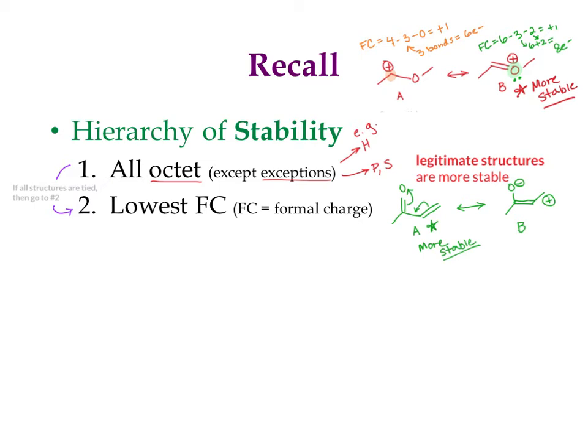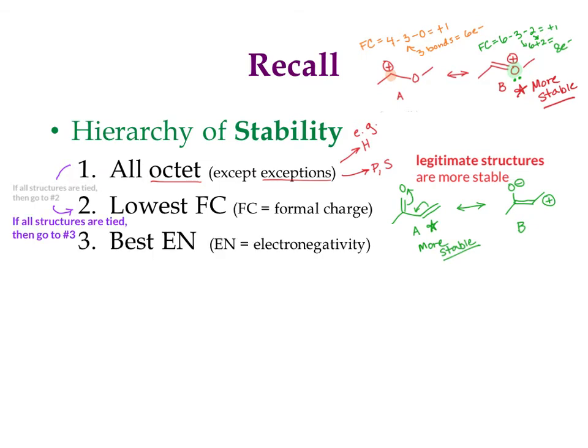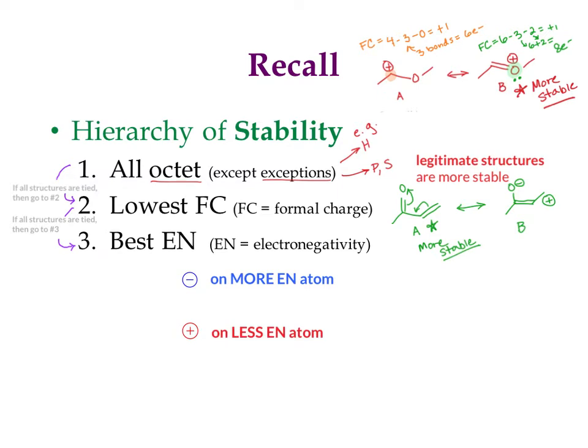Moving on — if everything is tied on both octet and formal charge, the last thing to consider is electronegativity relative to the formal charges. If you have a negative formal charge, it's more stable on a more electronegative atom. If you have a positive formal charge, it's more stable on a less electronegative atom.